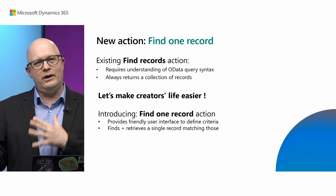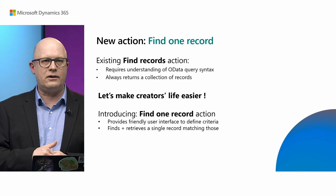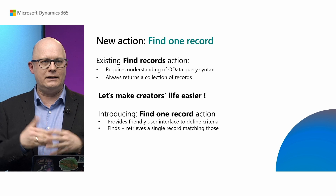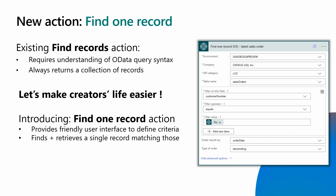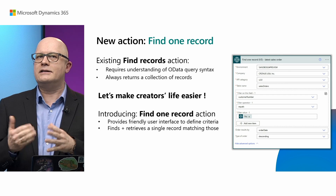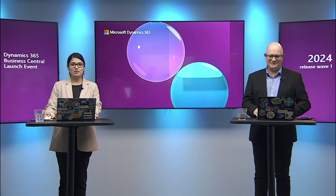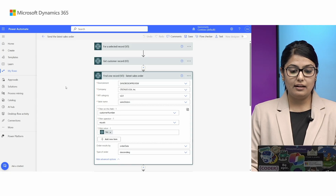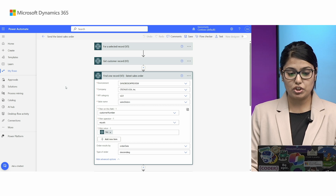We are making your life easier by introducing a new action that allows you to find just one record with a friendly user interface. Imagine a simple scenario where you want to build an action in Business Central that sends the latest sales order of a given customer to your colleagues via Teams. With this new Find One Record action, it is much simpler. Here we have the flow to send the latest sales order for a given customer — a very simple flow using the new Find One Record action, which finds the latest sales order given the customer number selected.